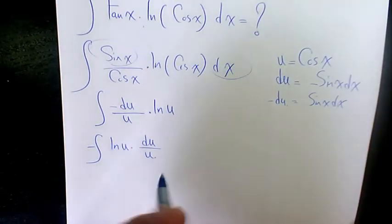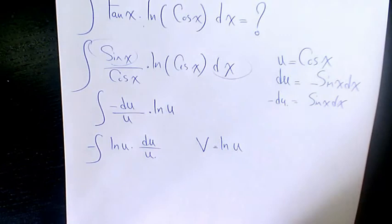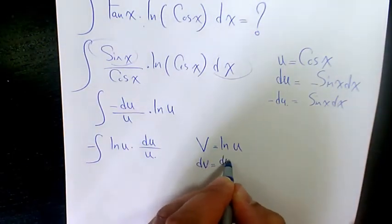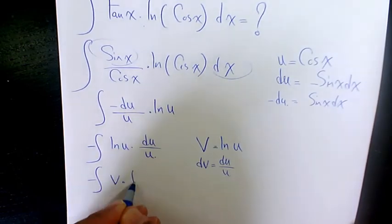Then what I can do, I'm going to define ln u as v. And dv will be du over u. So we have negative v times dv.